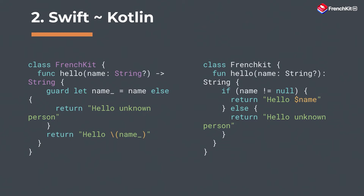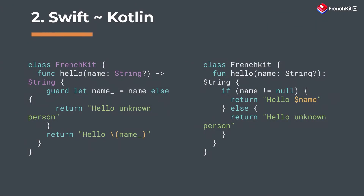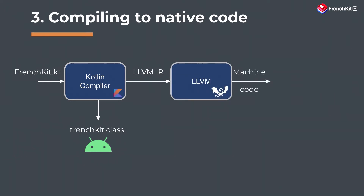Here's a simple class I'm going to reuse throughout the presentation. It takes one string as input and returns "hello" with that string. It showcases a few language features and you can see it's really similar to Swift — only the guard equivalent is a bit different. Since the languages are so similar, JetBrains thought: what if we take Kotlin and use it on iOS and macOS? To do that, they make use of the Kotlin compiler. On Android you take your Kotlin file and get a JVM class file. On native, they patched the Kotlin compiler to output LLVM intermediate representation, which they feed to LLVM, which generates machine code and outputs a nice framework.